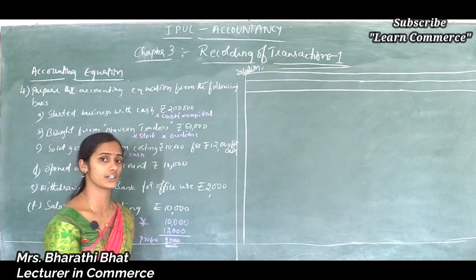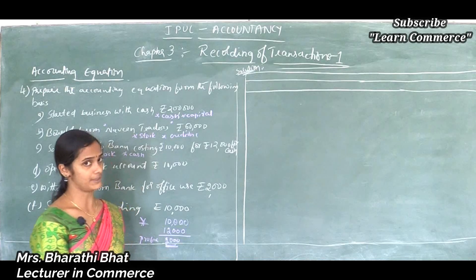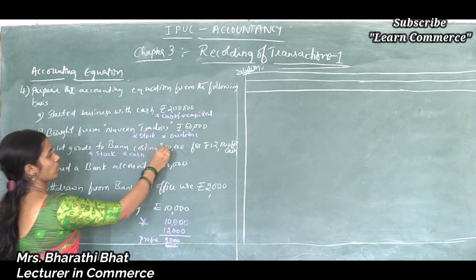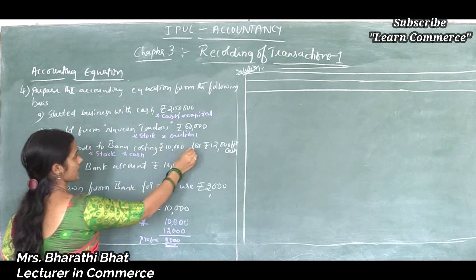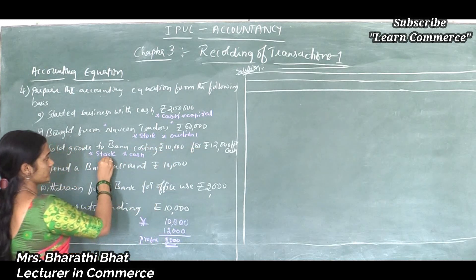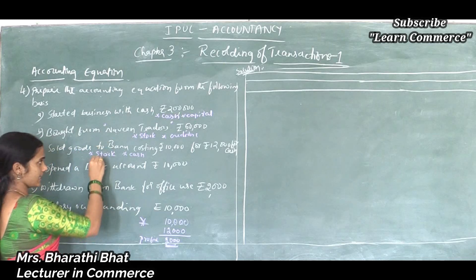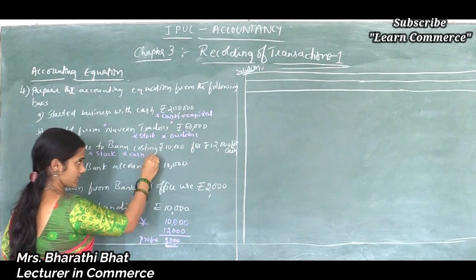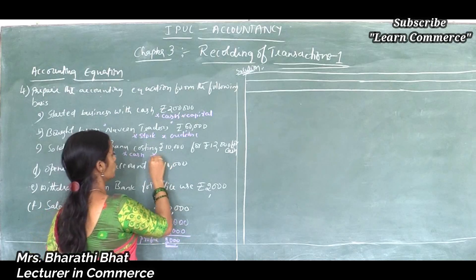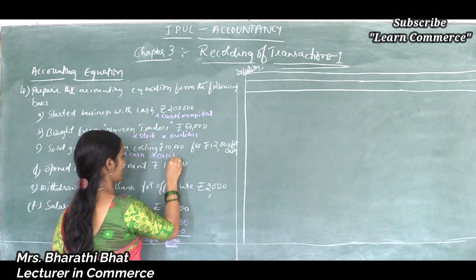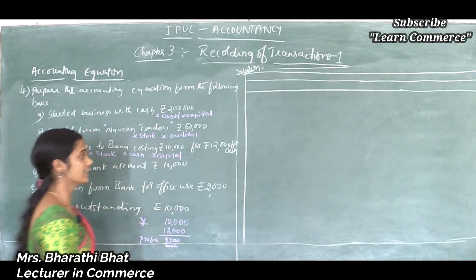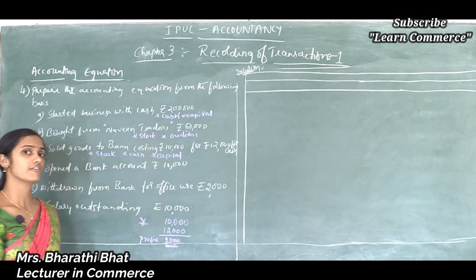Here, sold goods to Banu costing rupees 10,000 for rupees 12,000. One account is stock — stock decreases. Cash increases by 12,000. And in that, 2,000 is added to capital, meaning capital shows increased value.